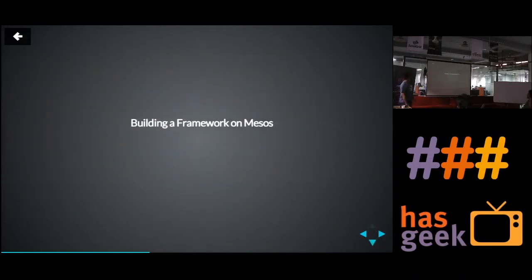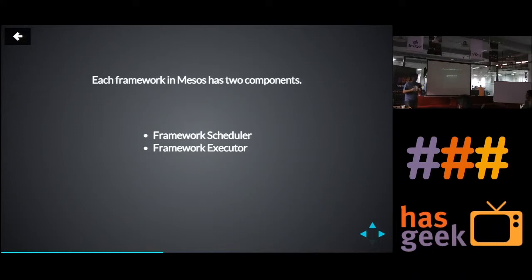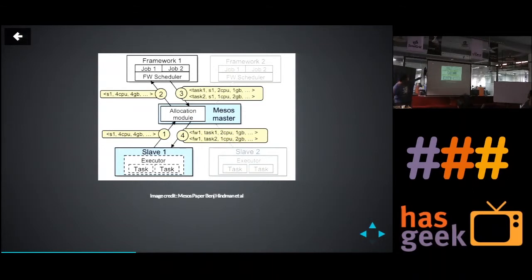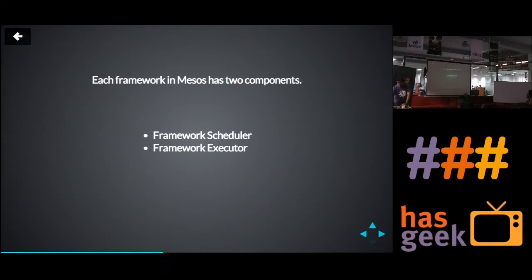Building a framework on Mesos: each framework that needs to run on Mesos has two components — one is a framework scheduler, one is a framework executor. We want each scheduler of the framework to be able to talk to the master and in turn also talk to the executor. These are components that need to be implemented by the framework — whatever framework you build needs to support this.